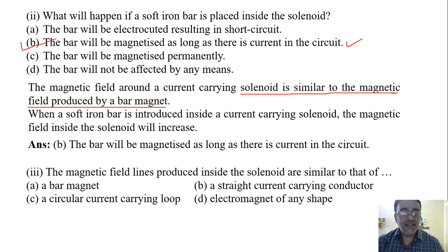Now the next question. The magnetic field lines produced inside a solenoid are similar to that of - it is already given in the context and here also we have seen. So the correct answer is a bar magnet.